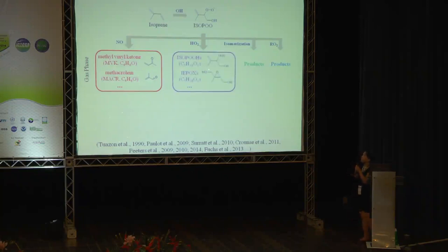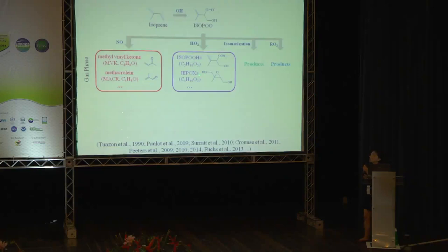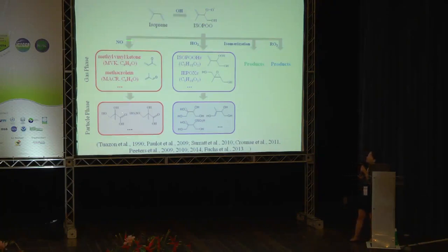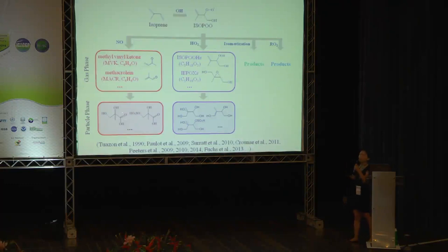For the HO2 pathway, the major first-generation products are isoprene hydroperoxides (ISOPOOH). The further reaction of isoprene hydroperoxides can lead to isoprene epoxydiol (IEPOX), which Jason has talked a lot about at this conference. These two pathways also have very different SOA yields and tracers. In the real atmosphere, the HO2 pathway and NO pathway are considered the dominant competing pathways for isoprene peroxy radicals. However, some recent studies suggest the isomerization pathway is very important too, especially in remote regions.